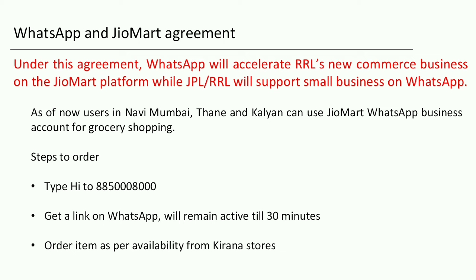Under this WhatsApp and JioMart agreement, WhatsApp will accelerate RIL's new commercial business, JioMart. As of now it is available in Navi Mumbai, Thane, and Kalyan. Just save the number 8850008000 to your WhatsApp, type 'Hi', and you will get a link on WhatsApp. The link remains active for 30 minutes, and you can see available products at nearby kirana stores and order them from home.